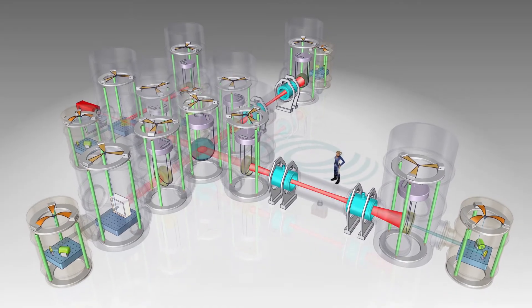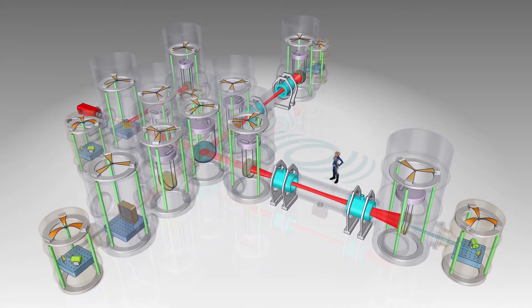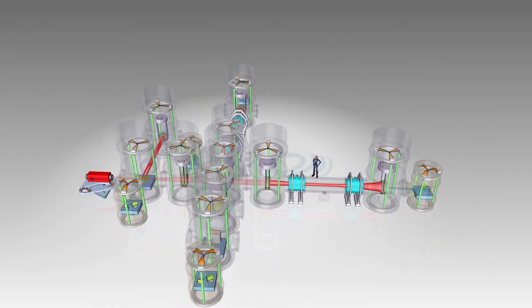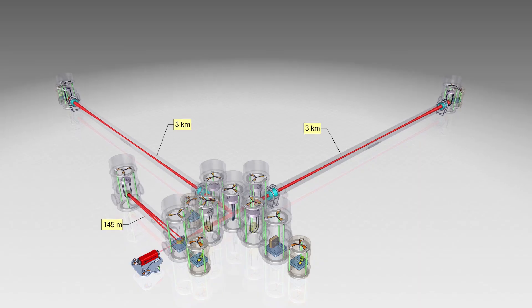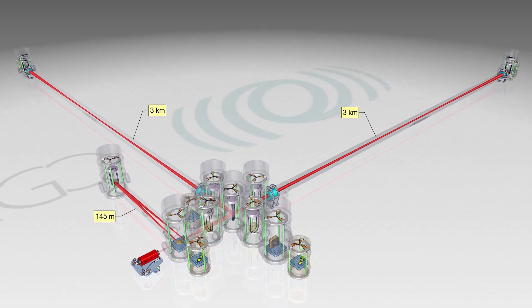We can pick up hundreds of times more signal of a gravitational wave by extending the Fabry-Perot cavities to three kilometers. This and much more is needed to realize an interferometer for detection of gravitational waves.